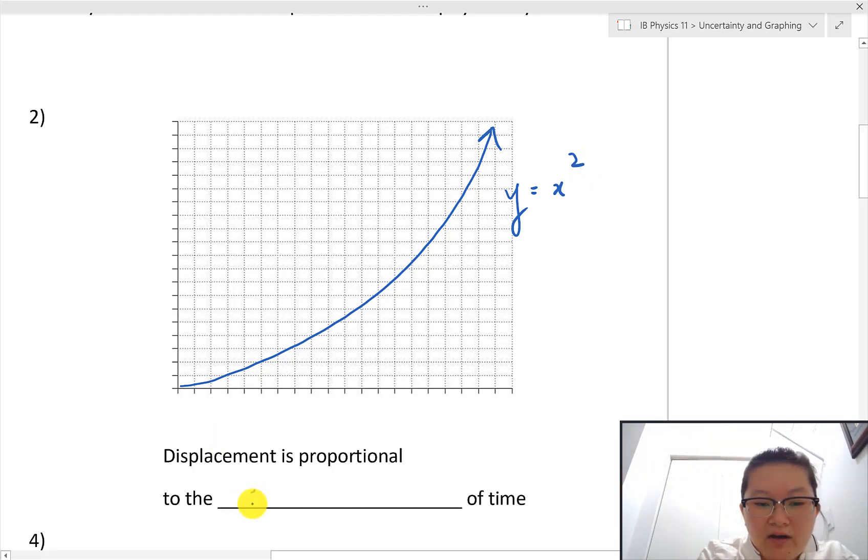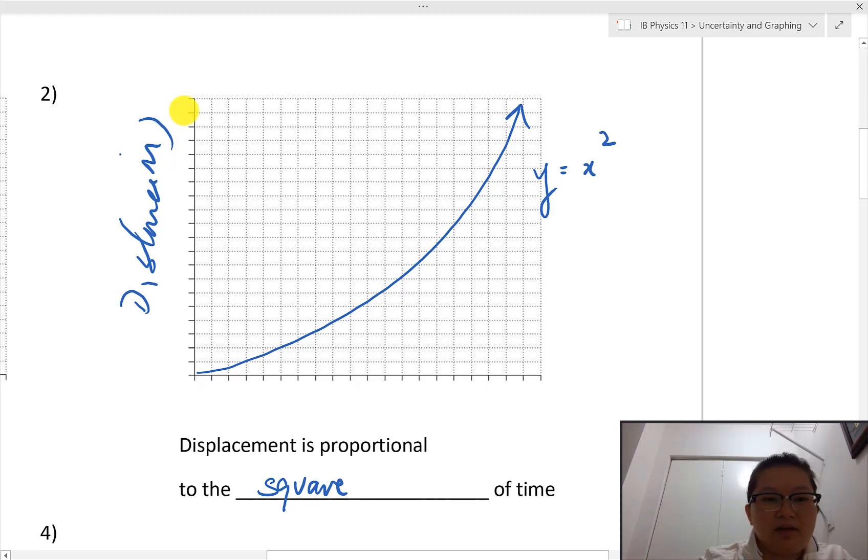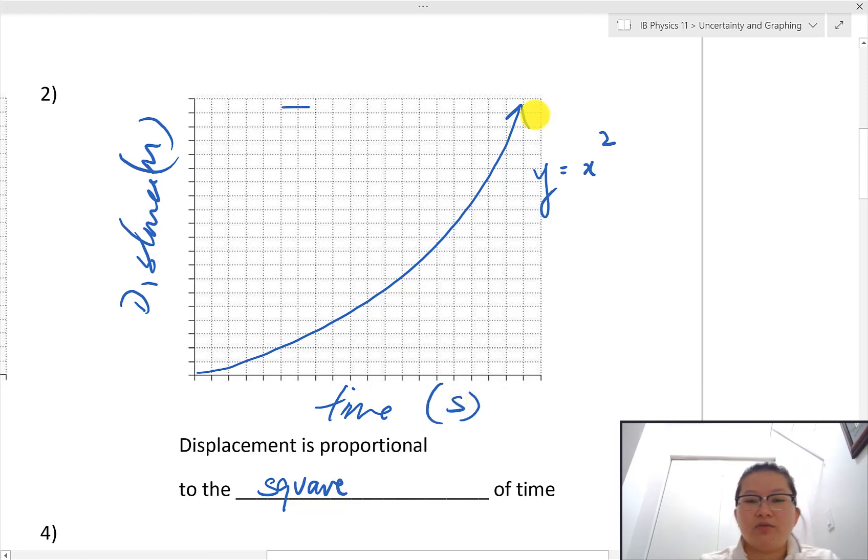So what does that look like? That would be something like distance on this side measured in meters, and then time right over here measured in seconds. Of course with a good title at the top. And again, this should also start at the origin, which means if it doesn't, that means either there's something in your lab that the way you set it up it's not supposed to, or that there might be some sort of systematic error if it was supposed to start at the origin. Displacement is directly proportional to the square of time.